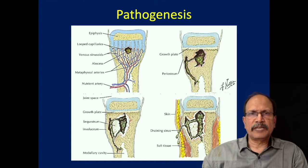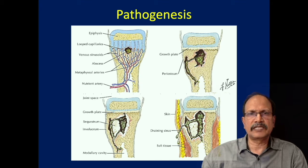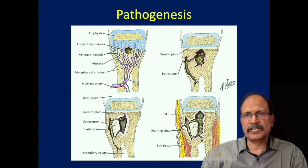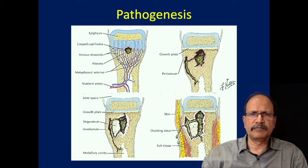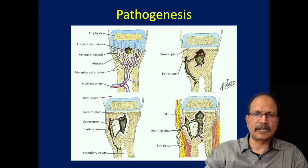Looking at the pathogenesis: bacteria most probably have the highest chance of landing in the metaphysis because of its rich vascularity. Once lodged in the metaphysis, an abscess is produced. This abscess may track through the bone via the Haversian system, producing sinuses within the bone that may communicate to the exterior. When there are multiple pathways for abscesses within the bone, certain segments may become devascular and dead pieces — these are called sequestra, and they may become entrapped within the bone.